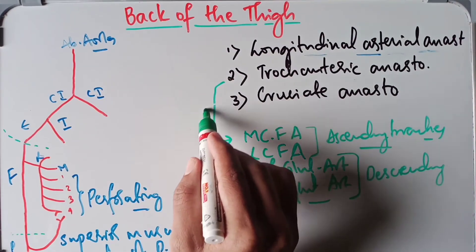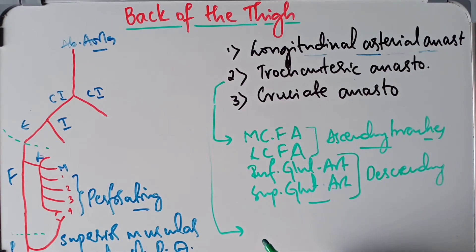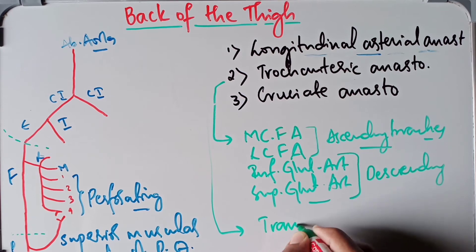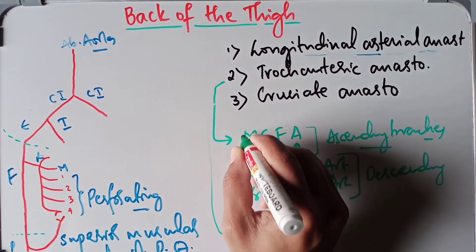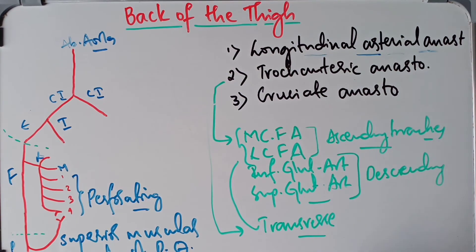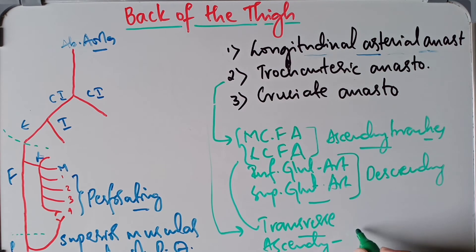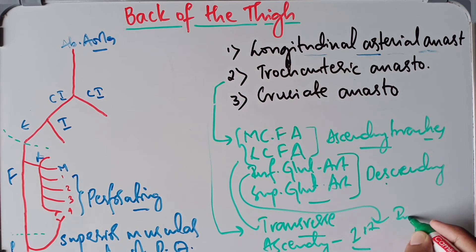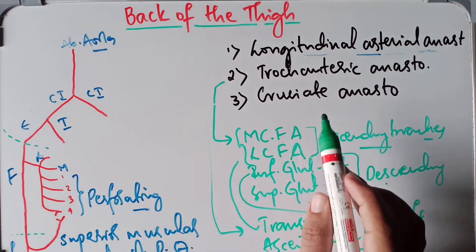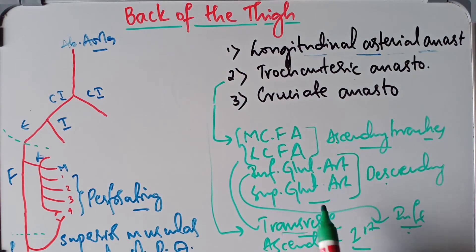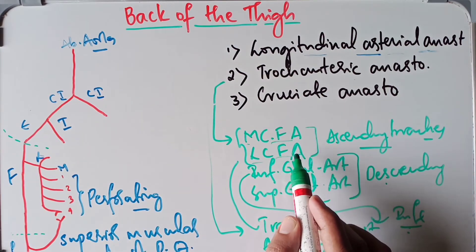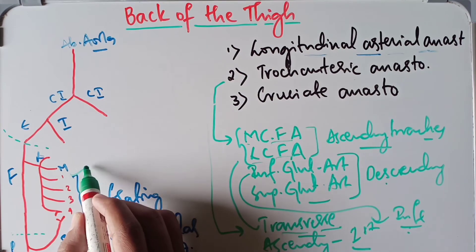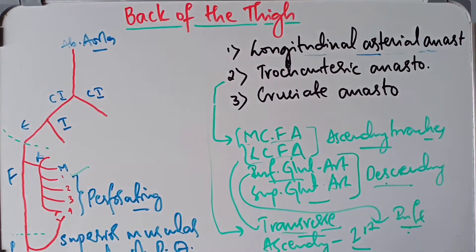For the cruciate anastomosis, we have the transverse branches of the medial circumflex femoral artery and the lateral circumflex femoral artery, along with the ascending branch of the first perforating artery and the descending branch of the inferior gluteal artery. To repeat: the cruciate anastomosis is formed by the transverse branches of the medial and lateral circumflex femoral arteries, the ascending branch of the first perforating artery, and the descending branch of the inferior gluteal artery.